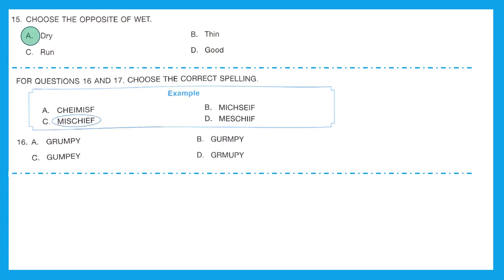For questions 16 and 17, choose the correct spelling. Question 16, looking at the question, I can see they are talking about grumpy. The right spelling is option A, G-R-U-M-P-Y, grumpy.